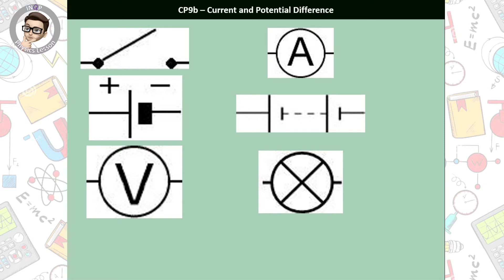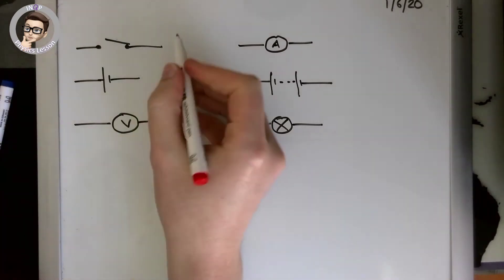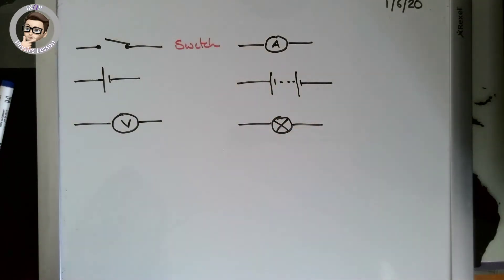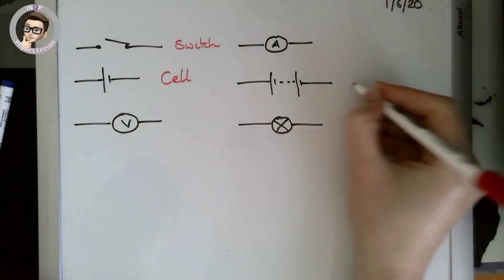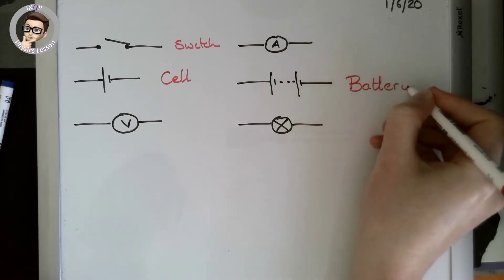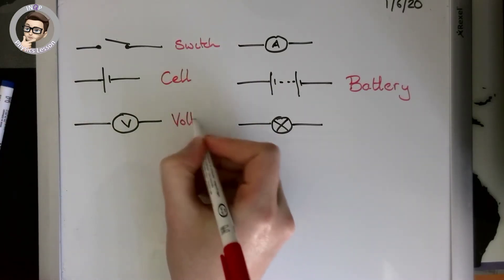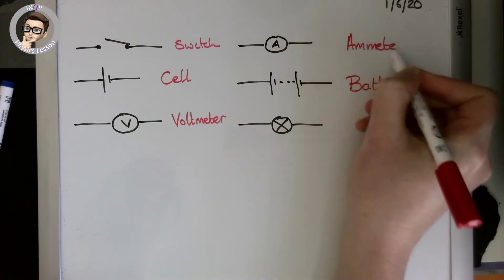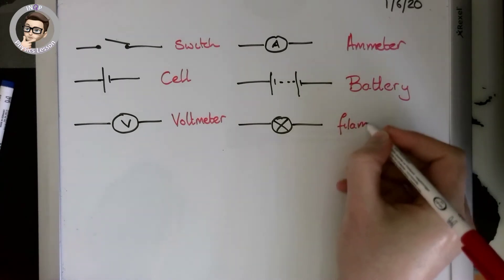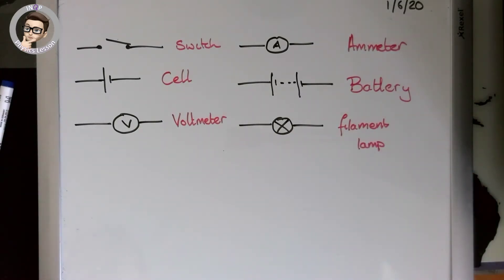Hopefully you've had a go at those. Let's go through the answers together. The top one, hopefully you remember from the last lesson, is an open switch. The second one is a cell, which means the fifth one is a battery — multiple cells put together. The third one down is a voltmeter, and the next one is an ammeter, which we'll learn about in today's lesson. The final one is a filament lamp — it's a filament one because we'll be learning about different types as we go through this topic. Well done if you managed to get those correct.